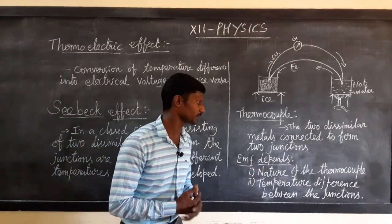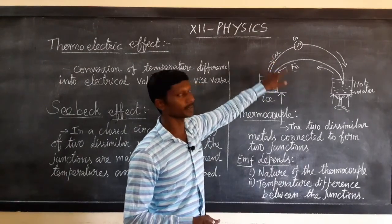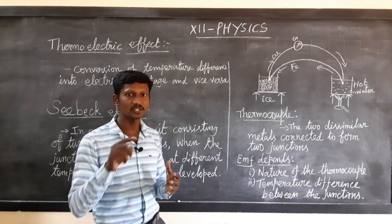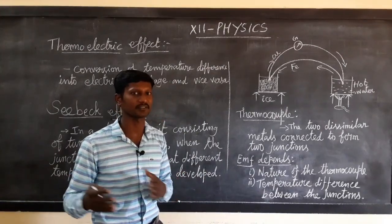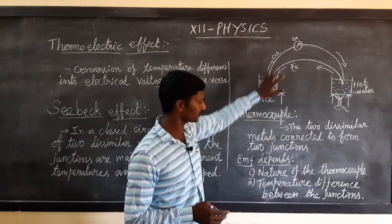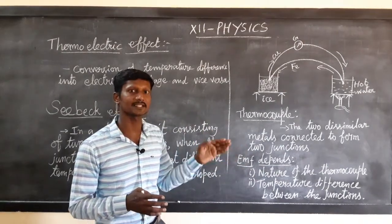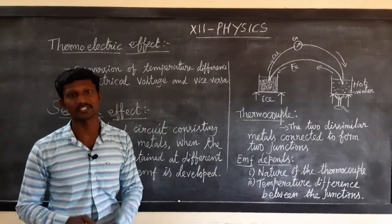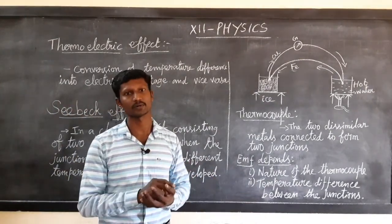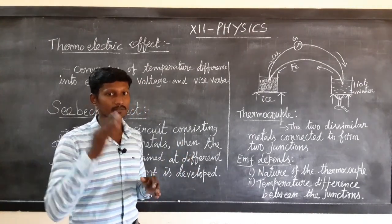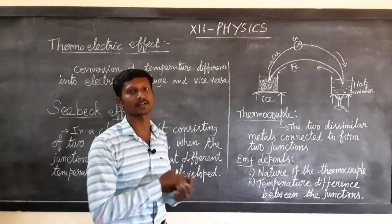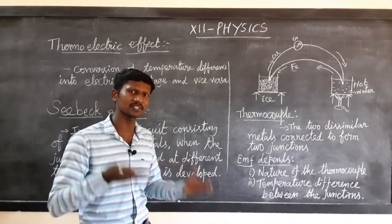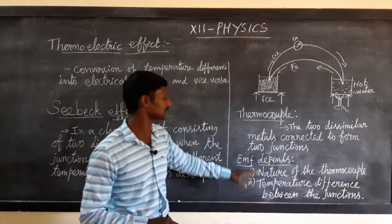The thermoelectric EMF depends on two things. First, the nature of the thermocouple — if you use iron and copper, you get a particular voltage; if you use lead, the EMF is zero, known as the null effect. Second, the temperature difference between the junctions — just as air flows from high pressure to low pressure and heat flows from high to low temperature, a greater temperature difference produces a greater EMF.